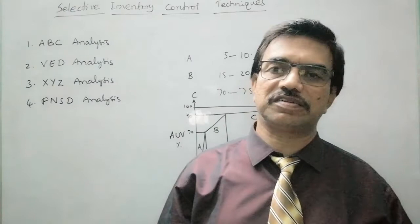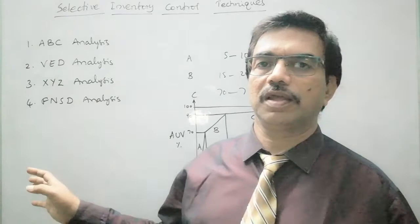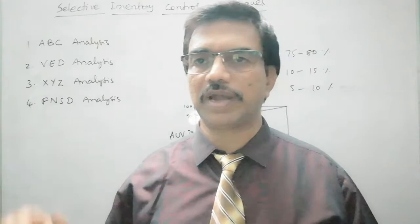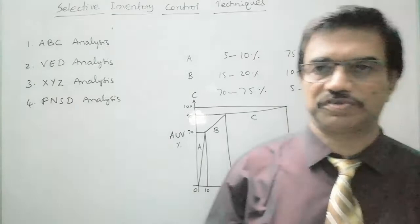Coming to the last one, FNSD analysis. This analysis is based on the rate of consumption. Accordingly, these four letters indicate: Fast, Normal, Slow, and Dead — depending on the rate of consumption. Let us now discuss these techniques one by one.